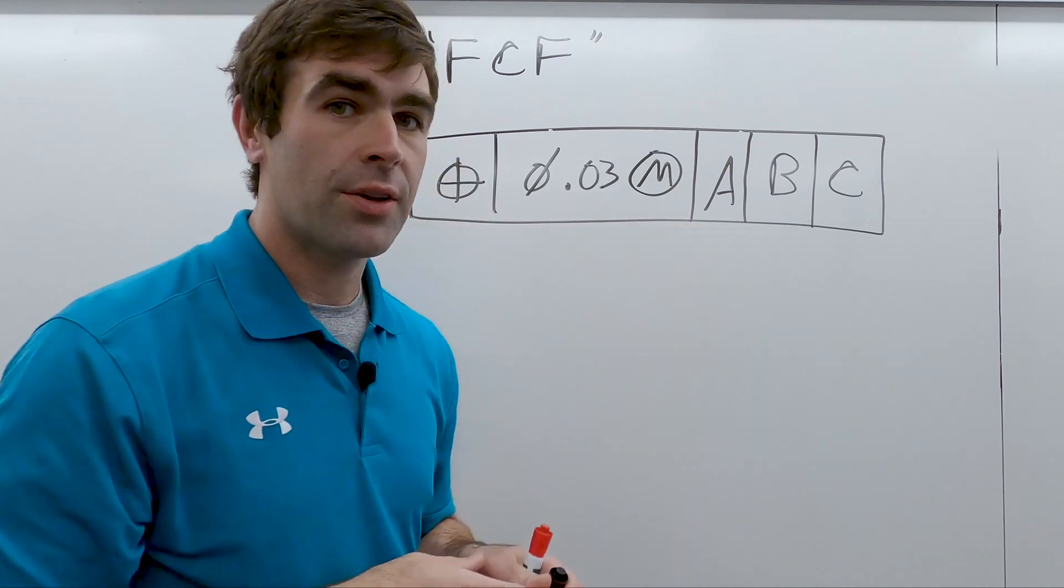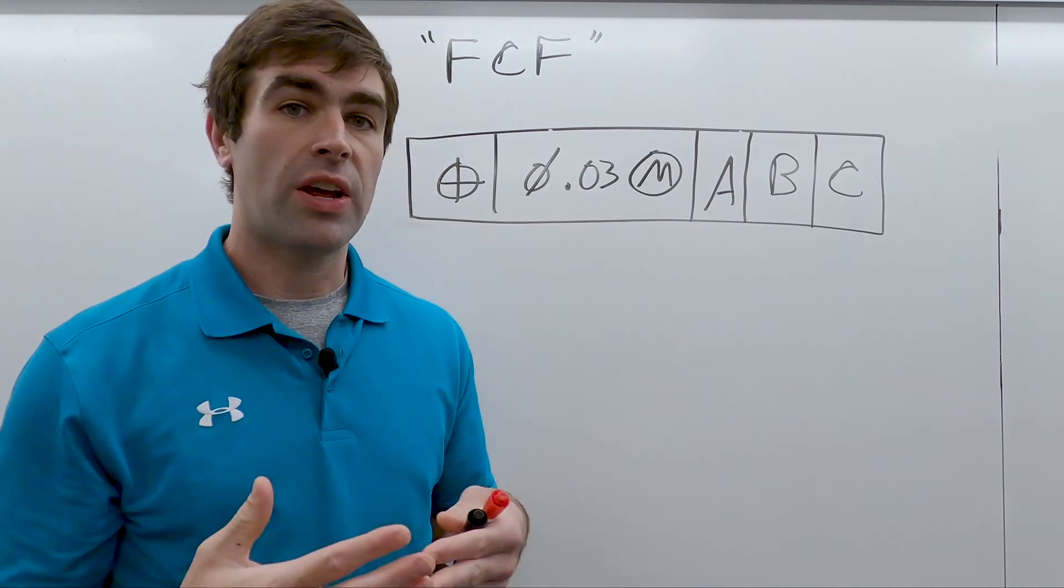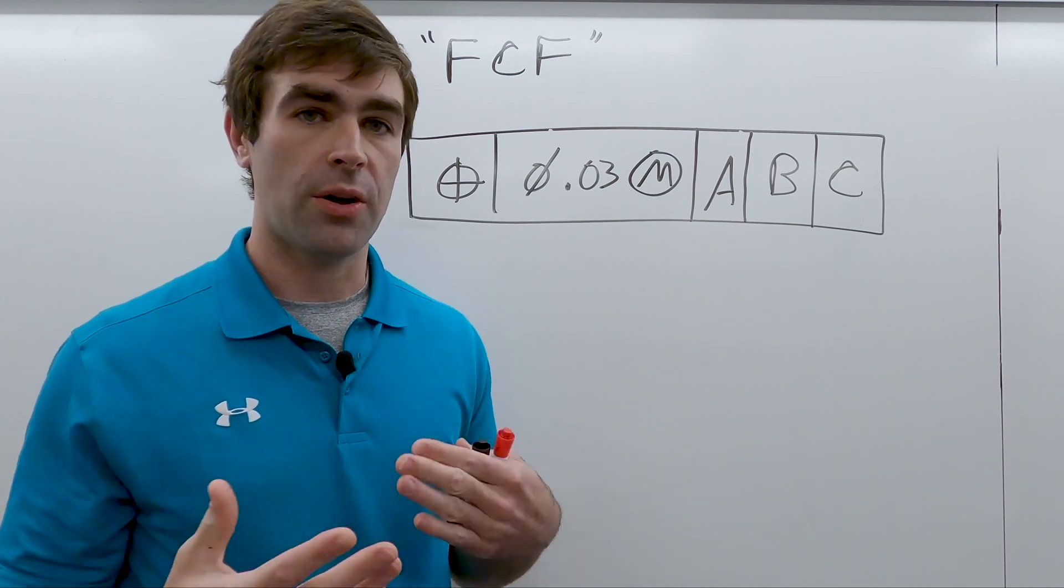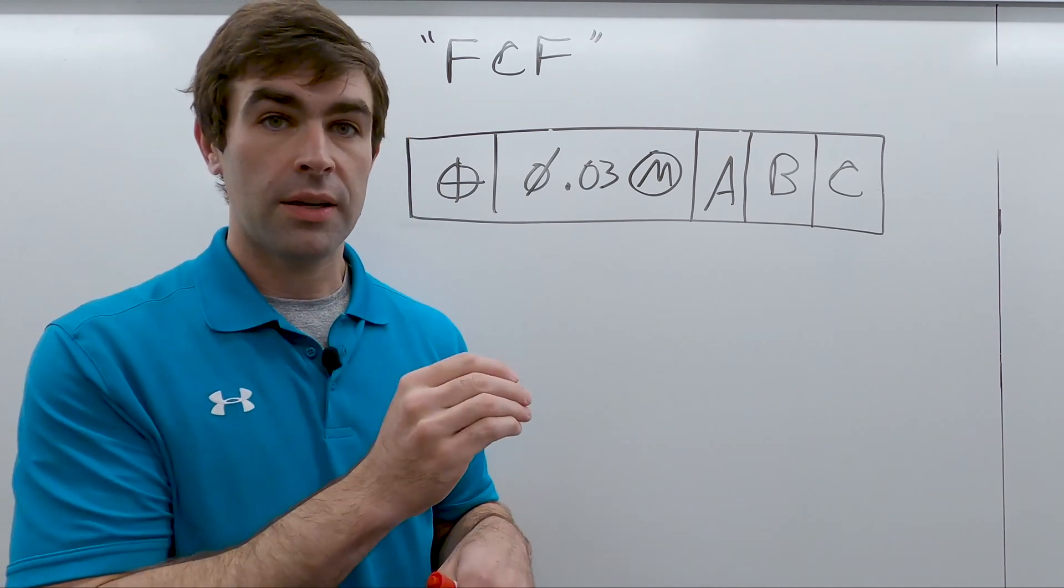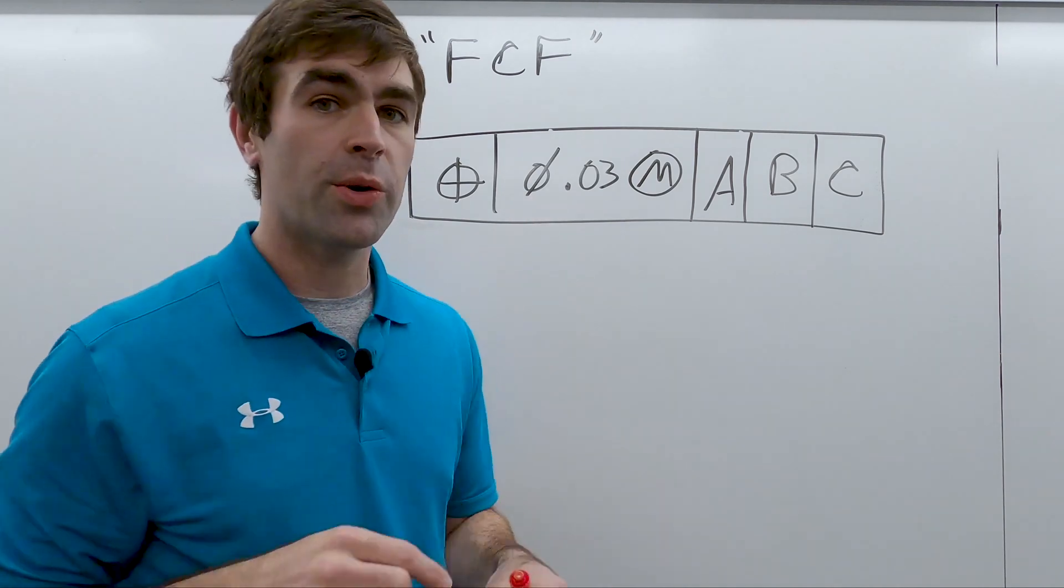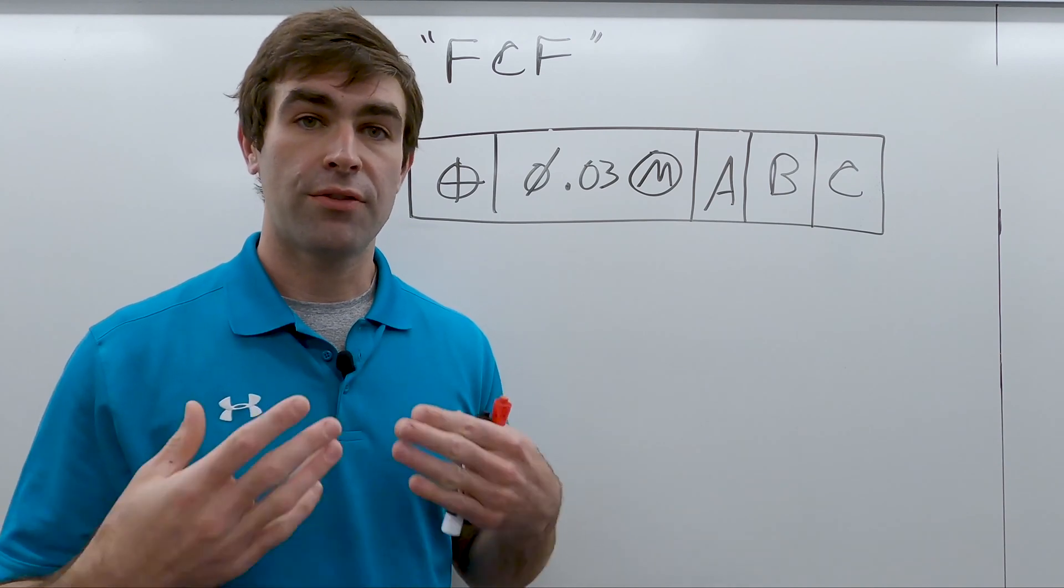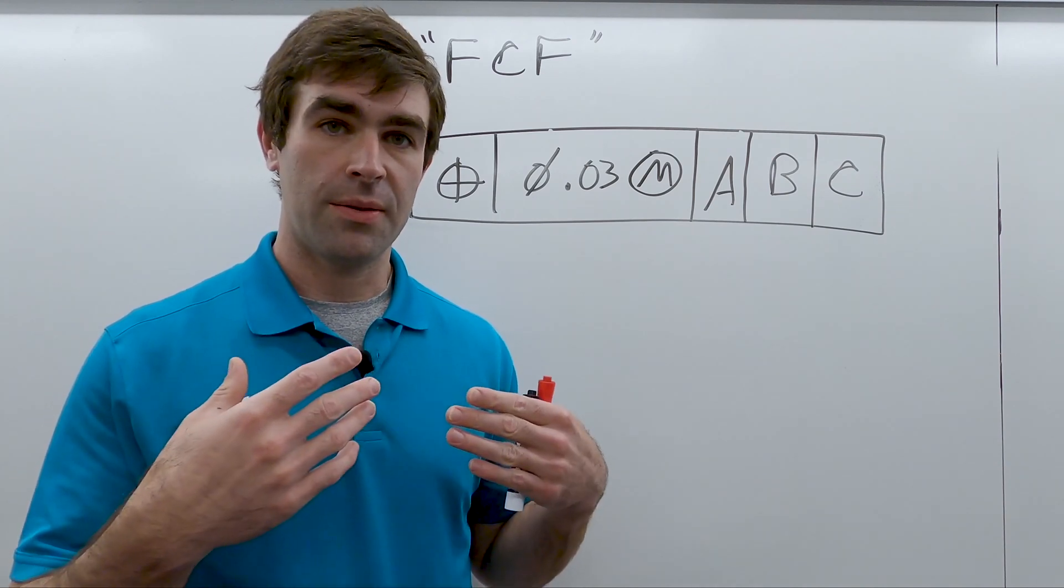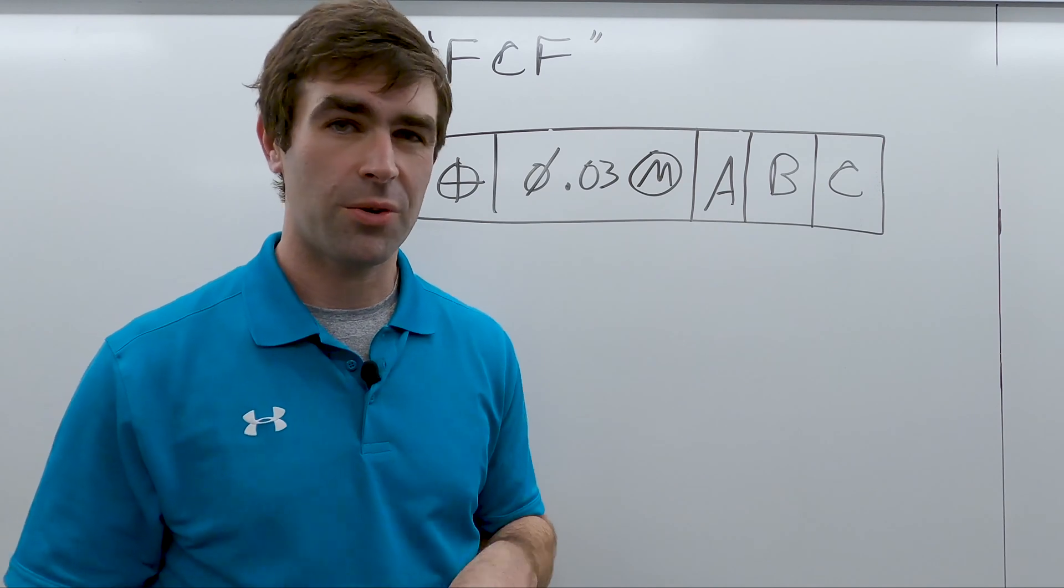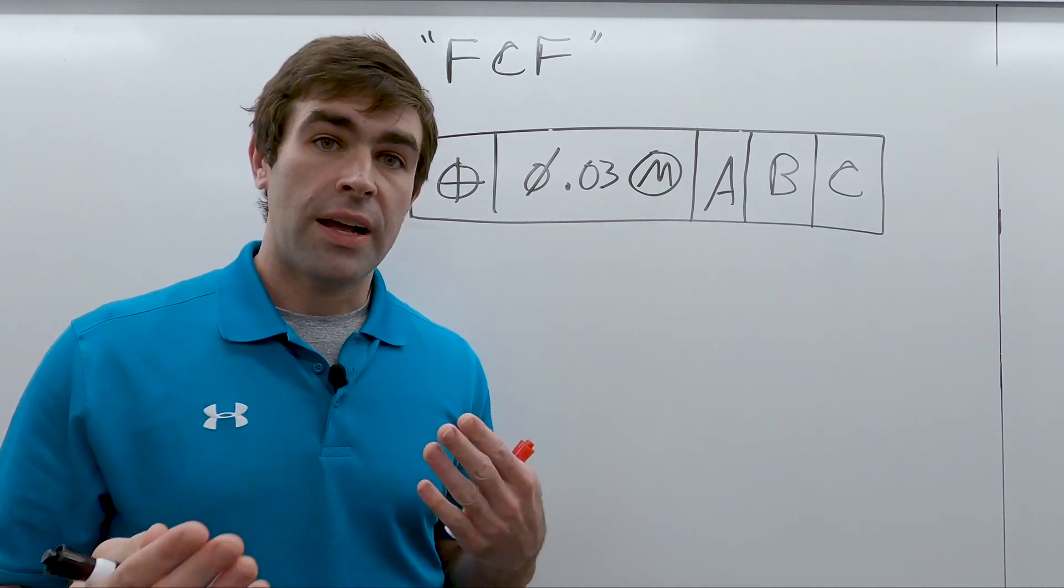The next compartment is going to hold the tolerance. This first thing is going to be the shape of the tolerance zone. It can only be nothing, which is just a flat zone, or a diameter symbol, which indicates a cylindrical tolerance zone, or a spherical diameter, which indicates a spherical tolerance zone. You won't see that very often though. Next is the actual amount of tolerance.